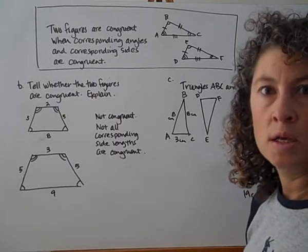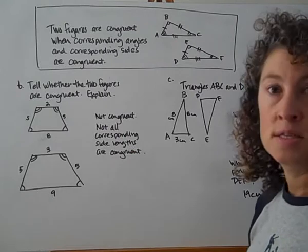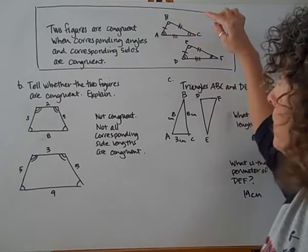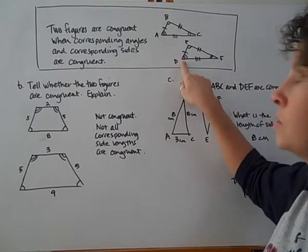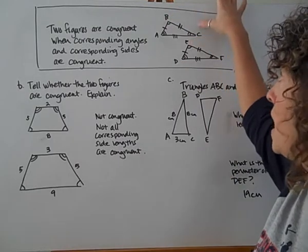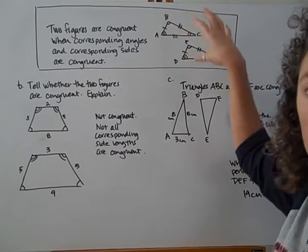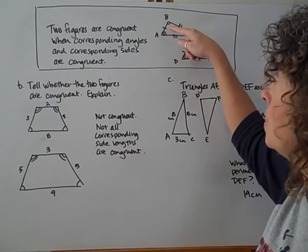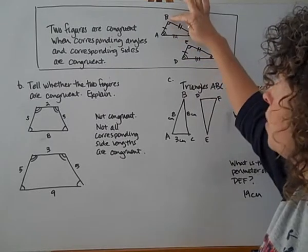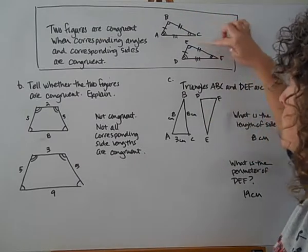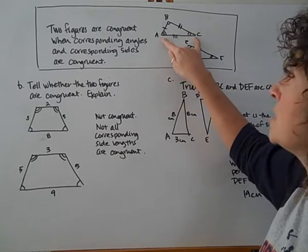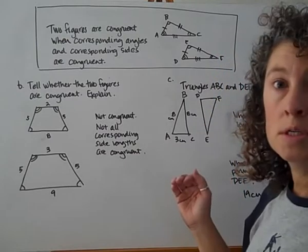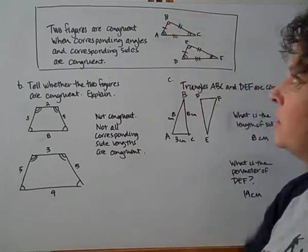Two figures are congruent when corresponding angles and corresponding sides are all congruent. Looking at triangles ABC and DEF: angle A has three arcs and so does angle D; angle B has one arc and so does angle E; angle C has two arcs and so does angle F — so all corresponding angles match. For the sides: between the three-arc and one-arc angles there's one hash mark on each; between the one-arc and two-arc angles there are two hash marks on each; and between the matching two angles there are three hash marks on each. All corresponding angles and sides are congruent, so these two figures are congruent to each other.